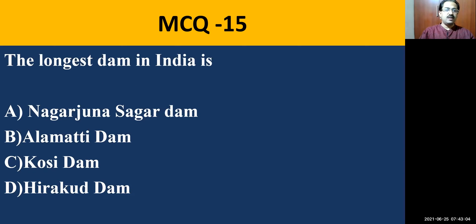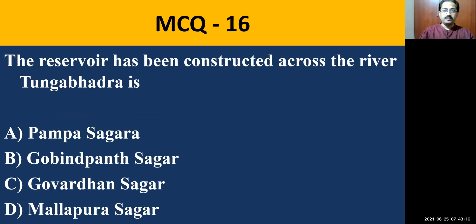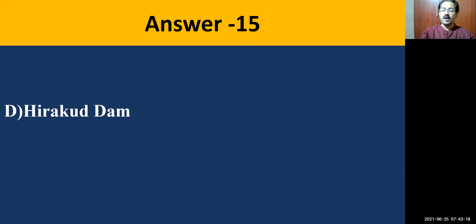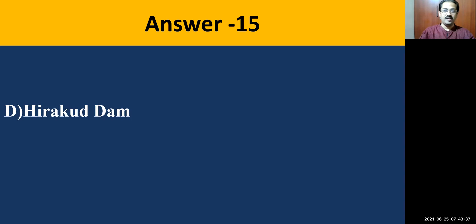MCQ question number fifteen: The longest dam in India is — Nagarjuna Sagar Dam, Alamatti Dam, Kosi Dam, or Hirakud Dam. The correct answer is Hirakud Dam. It has a stretch of about 4.8 kilometers, making it the lengthiest dam, built across River Mahanadi. Many smaller check dams are also built across the Mahanadi.